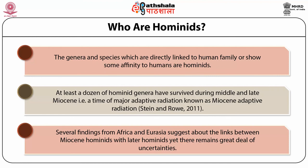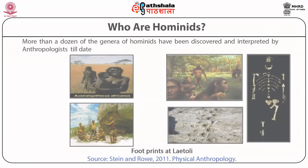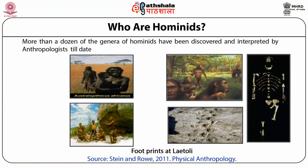Several findings from Africa and Eurasia suggest about the link between earlier hominids and later hominids. Yet there remains a great deal of uncertainty. However, anatomical and molecular data indicate that gorilla, chimpanzee, and bonobos are more closely related to humans than orangutan.